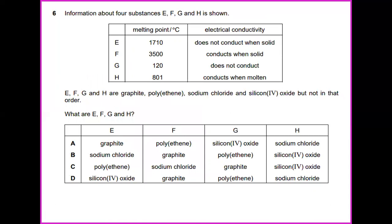Information about 4 substances E, F, G, and H is shown. E has melting point 1710°C and does not conduct when solid. This is the property of silicon dioxide. F has melting point 3500°C and conducts when solid. This is the property of graphite. G has melting point 120°C and does not conduct, so this is iodine. And H has melting point 801°C and conducts when molten. This is the property of sodium chloride. The answer for this would be D.